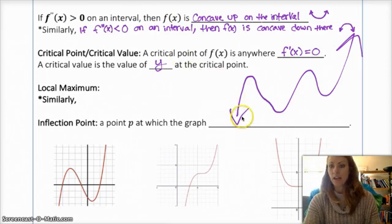The definition of local max and local min isn't mathematically rigorous here, but generally speaking that's how you'd think of it. The next definition is an inflection point. An inflection point is a point on the graph where the graph changes from concave down to concave up, or from concave up to concave down — basically a point where the graph changes concavity. We'll look at what that means on the graph and within the function.